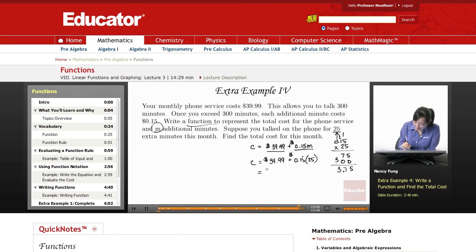Those extra 25 minutes over your allowed 300 minutes are going to cost you $3.75 additional.